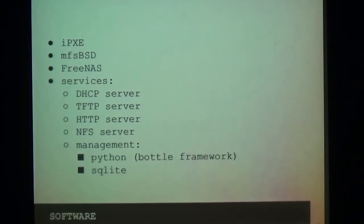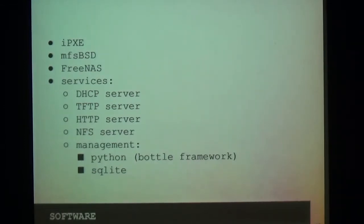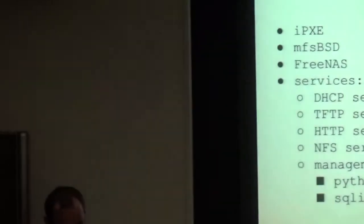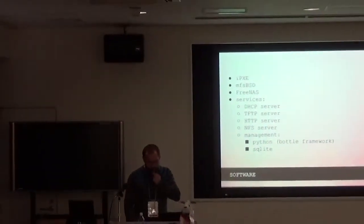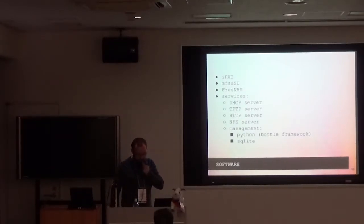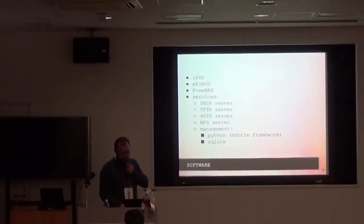Let's see the list of the software — I'll describe all of them later. First is iPXE, open source boot firmware. MFSBSD is a minimal installation of FreeBSD loaded into memory. FreeNAS is an operating system to build your own NAS based on FreeBSD. And for services: we need a DHCP server for netbooting to iPXE firmware. We need TFTP for providing images. In this case I use Apache, but it doesn't matter which HTTP server you use. Next service is NFS — it's shared storage for source code, results of compilation, and log files. The last service is the management application, written in Python with the Bottle framework. Information about nodes and revisions is saved in a SQLite database.